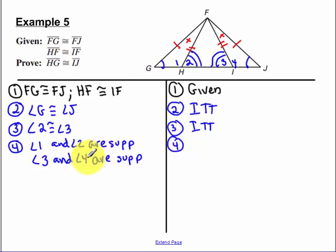So when I do that, I have two sets of supplementary angles. Remember that was our supplements theorem. Supplements theorem. Now, remember we've said 2 and 3 are equal. So 2 and 3 are equal. 1 and 4 are supplements of congruent angles.